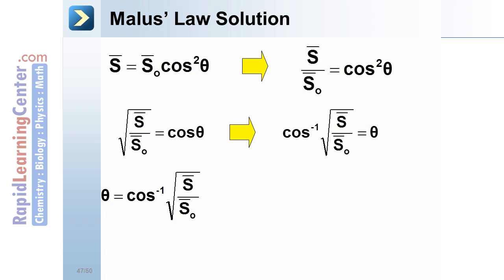Once we've rearranged our formula, we can substitute in our values. Actual values weren't given, but we can use one as our original intensity and one-half as our reduced intensity. This gives us a value of 45 degrees.